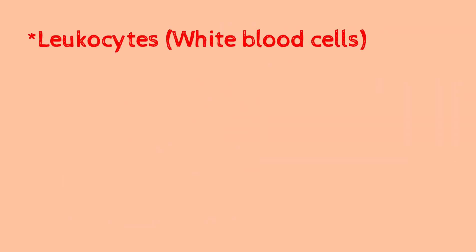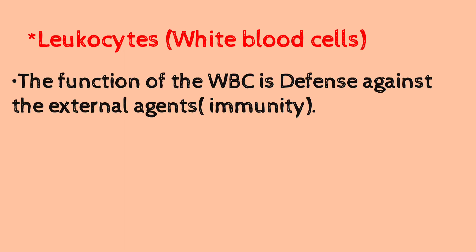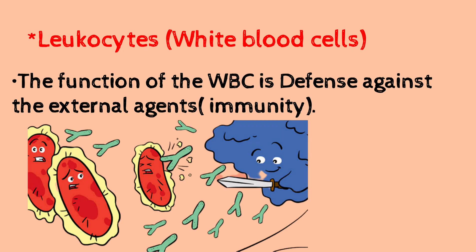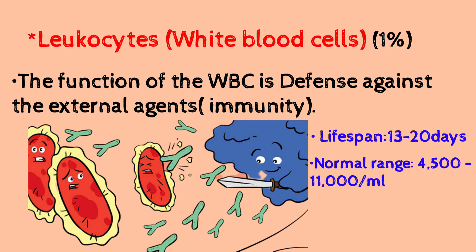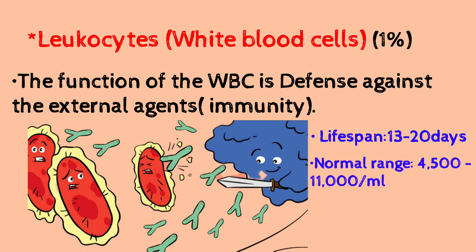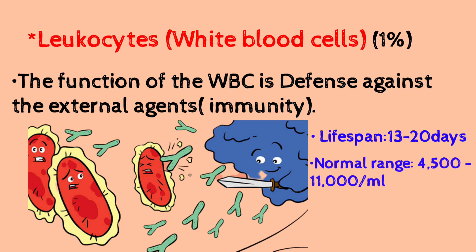Now, leukocytes are white blood cells. These cells help in defending immunity and maintenance. Once an antigen enters the body, these cells activate and work against it. WBC is approximately 1% of total blood cells. The lifespan of WBC is about 13 to 20 days. WBC are classified into two types based on the presence of granules.